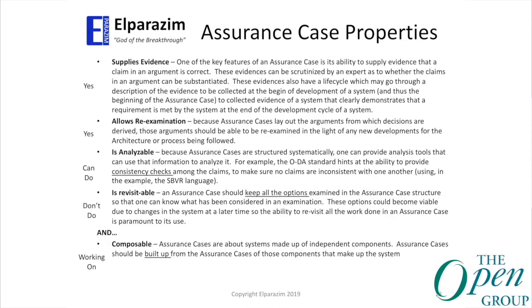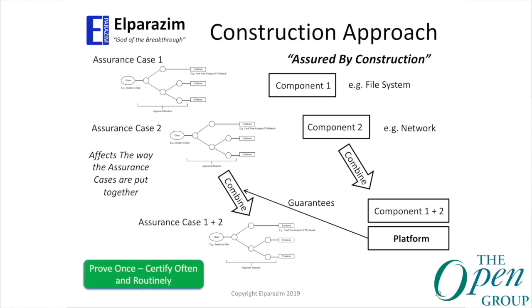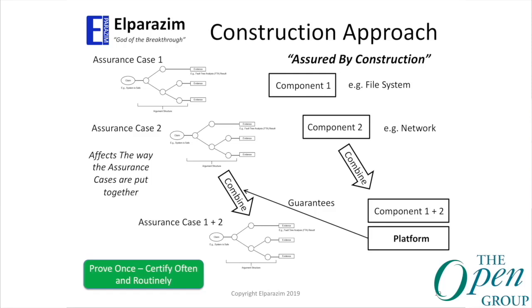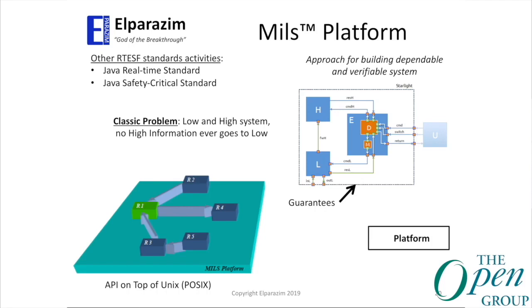One key assurance case property is composability — this is where the rubber meets the road. We'd like to derive assurance cases for individual components and then, when combining components, combine their assurance cases. That's a tough problem — still the holy grail. What it typically means is you need a platform that guarantees certain assurance properties. This is why we've spent a lot of work on the MIL standard: a platform where you define constraints, the platform enforces them, and you can do some combining of assurance cases.